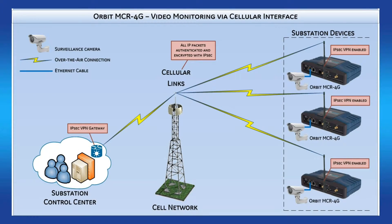As mentioned, a common use case for the Orbit device is to provide network access to a normally isolated area. Utilities often have distribution substations in remote locations of their franchise territory. Since cellular coverage is usually available at these locations, the Orbit MCR4G can communicate with video surveillance devices via Ethernet and the local cellular tower, ultimately providing data back to the substation control center over the cellular network.